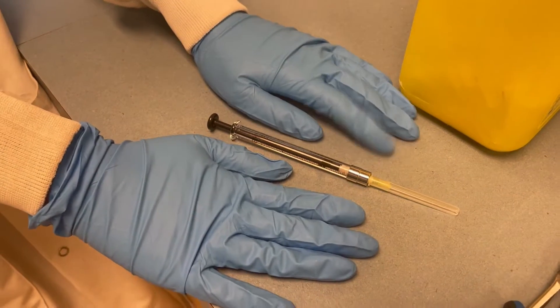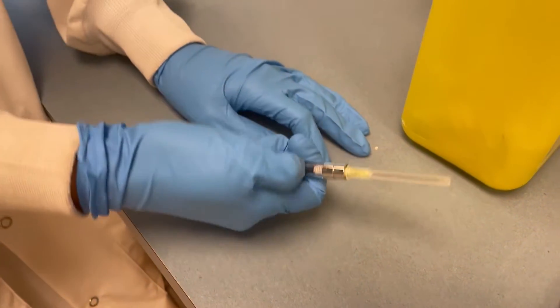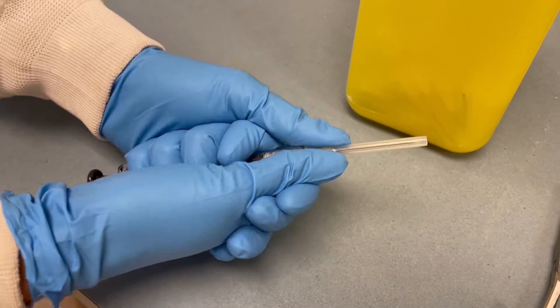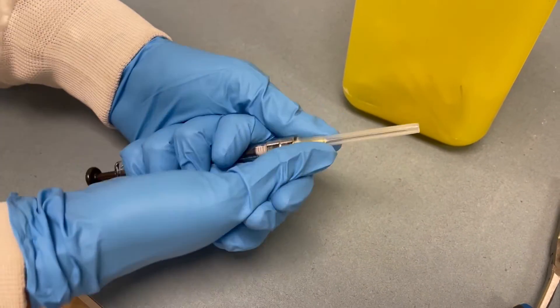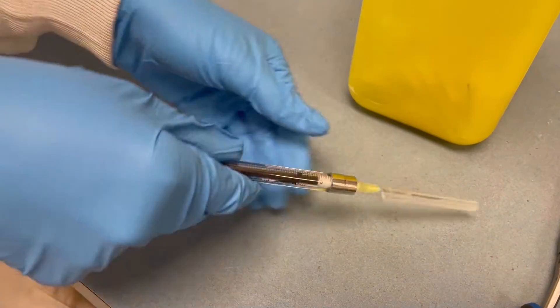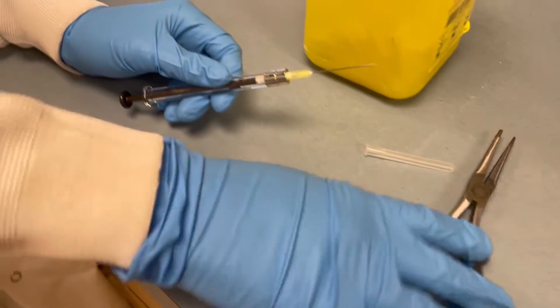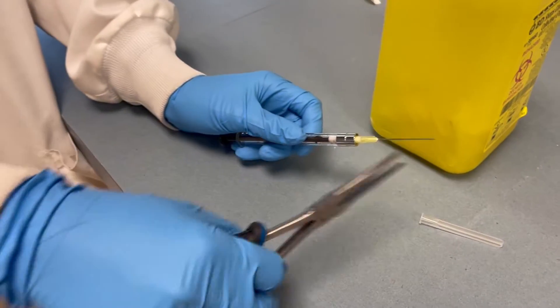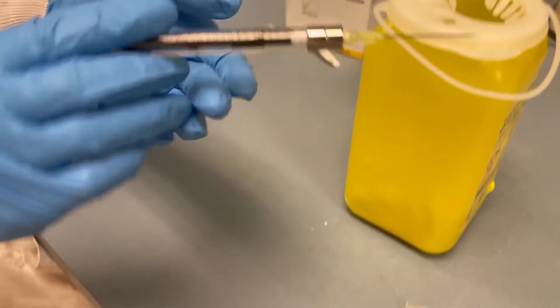When you have the luerlock needle on a syringe and you want to remove the cap, hold it firmly in one hand or both and remove the cap with both thumbs. If you're having difficulty doing that you can also use a tool to help you remove the lid.